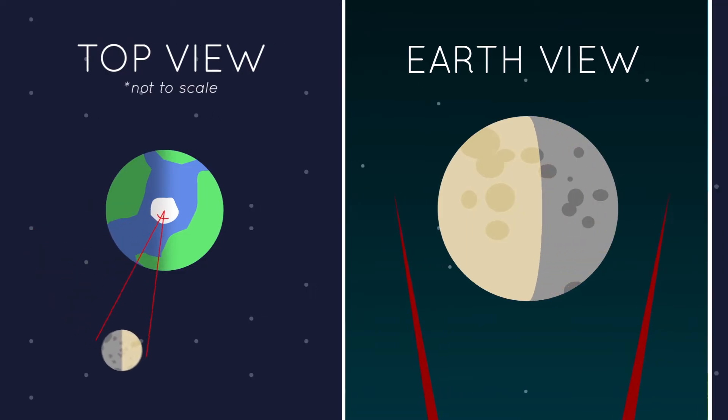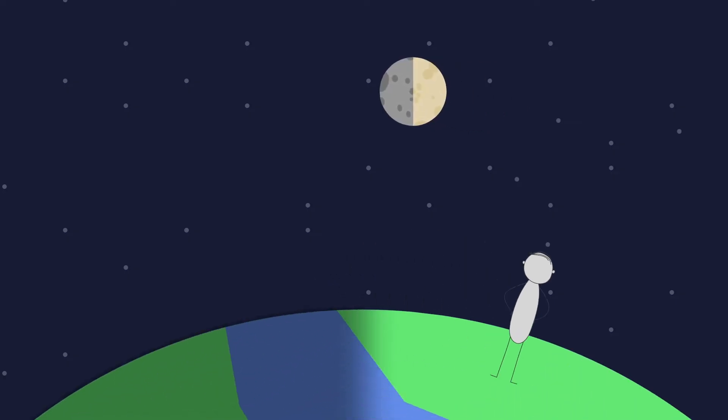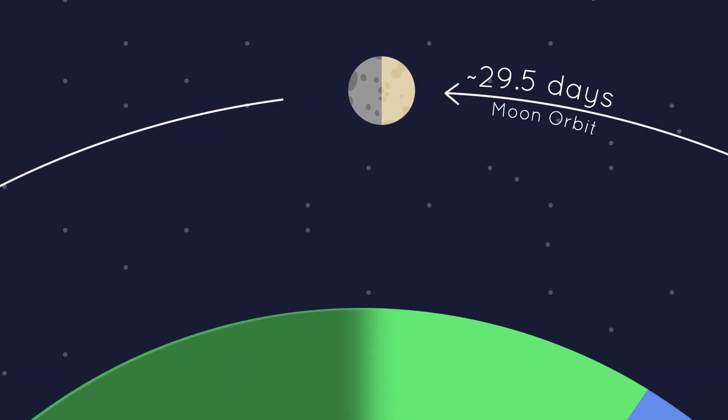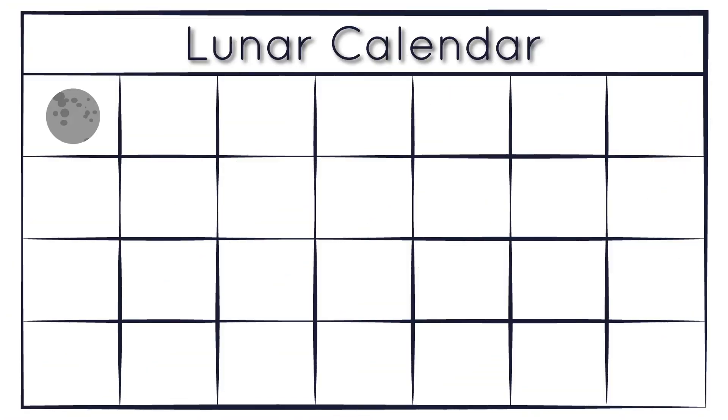It is a misconception that the moon revolves around the Earth every day. It might appear this way because it rises and sets in the sky regularly. But this phenomenon is actually caused by the Earth's rotation. It takes about 29 days for the moon to revolve around the Earth, which, you might notice, is about the same length as a regular month.